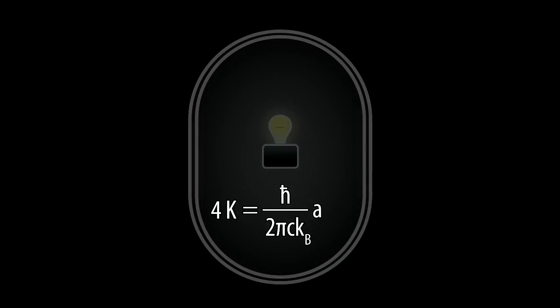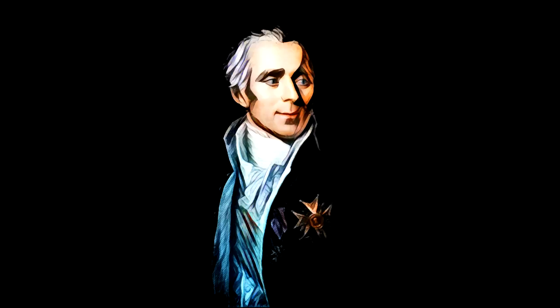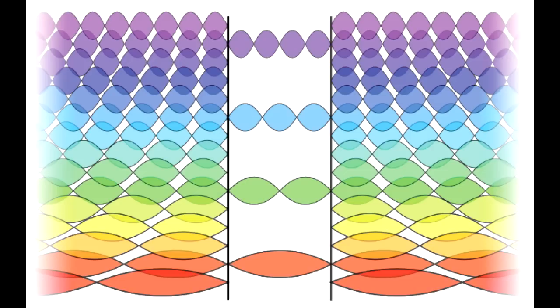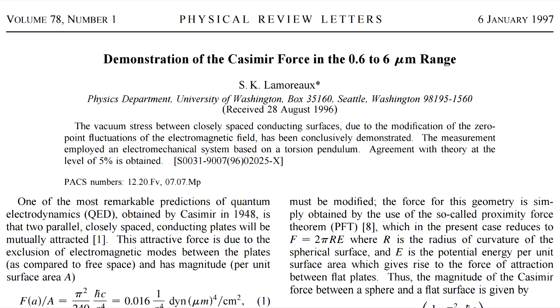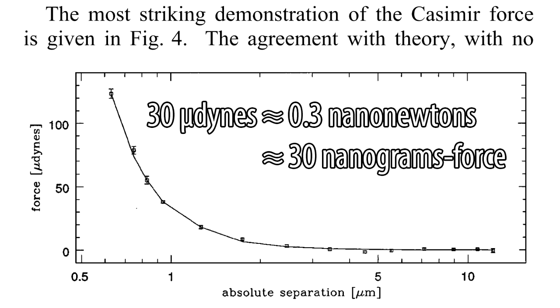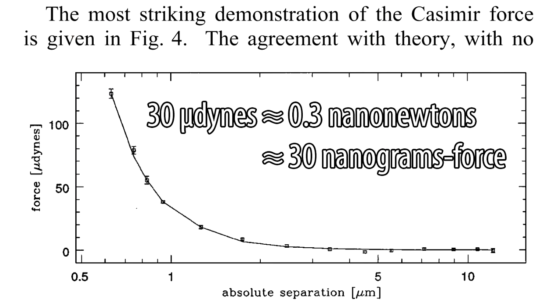In order to get an Unruh temperature of about 4 degrees above absolute zero, you would need to accelerate at about 100 quintillion Gs — that's a 1 with 20 zeros. McCulloch claims that this effect is responsible for inertia. He invokes the Casimir effect, which is a quantum mechanical attraction between two parallel conducting plates, due to the fact that only certain wavelengths of light are allowed between them. It's also a tiny effect, but this one is actually measurable. The experiment was performed in 1997 by Lamoreaux. For plates separated by about 1 micrometer, he measured a force of about 30 nanograms — the weight of a grain of pollen — and it diminishes very rapidly with distance.